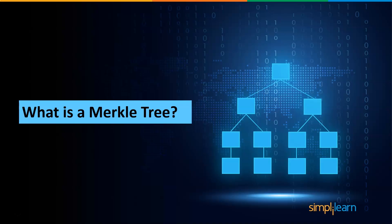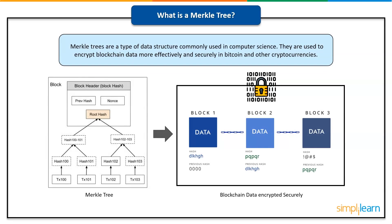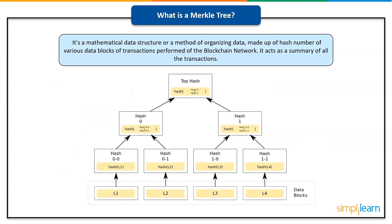Now the very first thing we will discuss is what is a Merkle tree. Merkle trees, also defined as binary hash trees, are a type of data structure commonly used in computer science. They are used to encrypt blockchain data more effectively and securely in Bitcoin and other cryptocurrencies. It's a mathematical data structure made up of hashes of various transactions across data blocks in a blockchain network, acting as a summary of all transactions in a block. It also enables quick and secure content verification across big data sets and helps verify the consistency and content of the data.